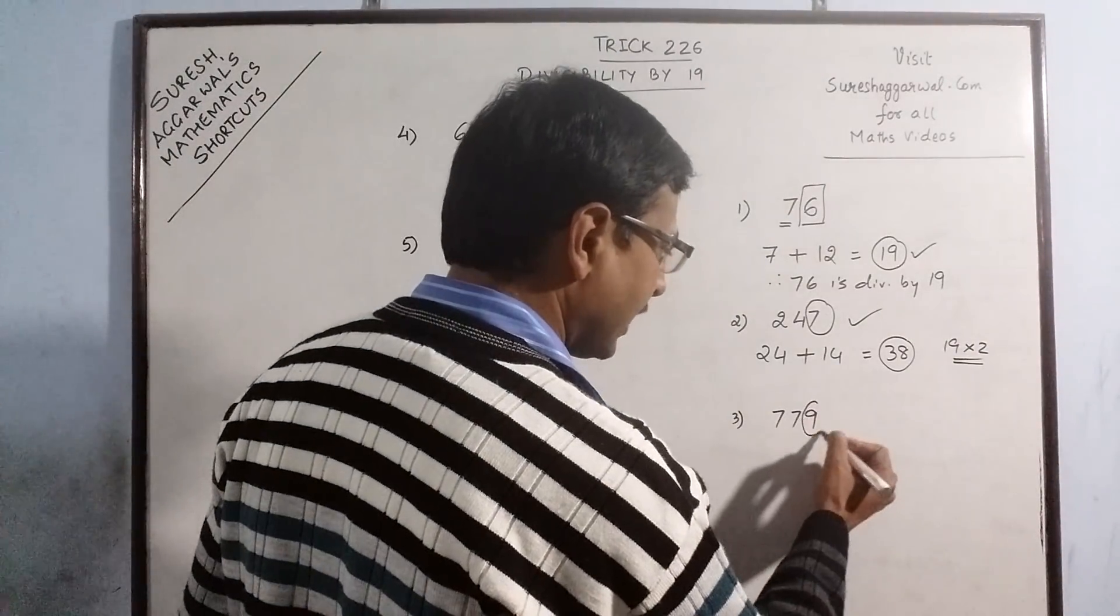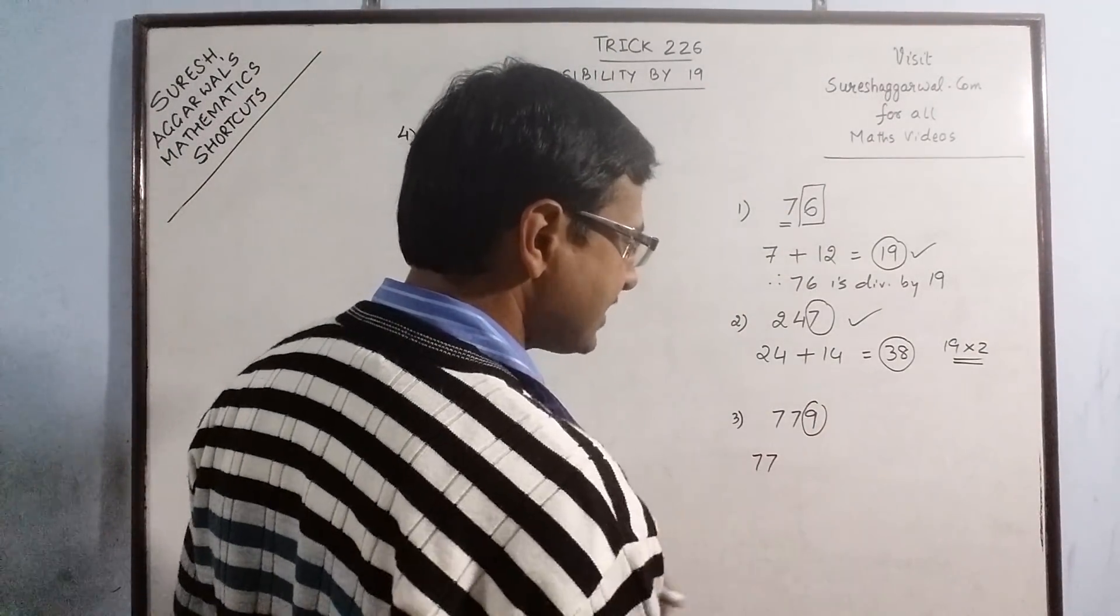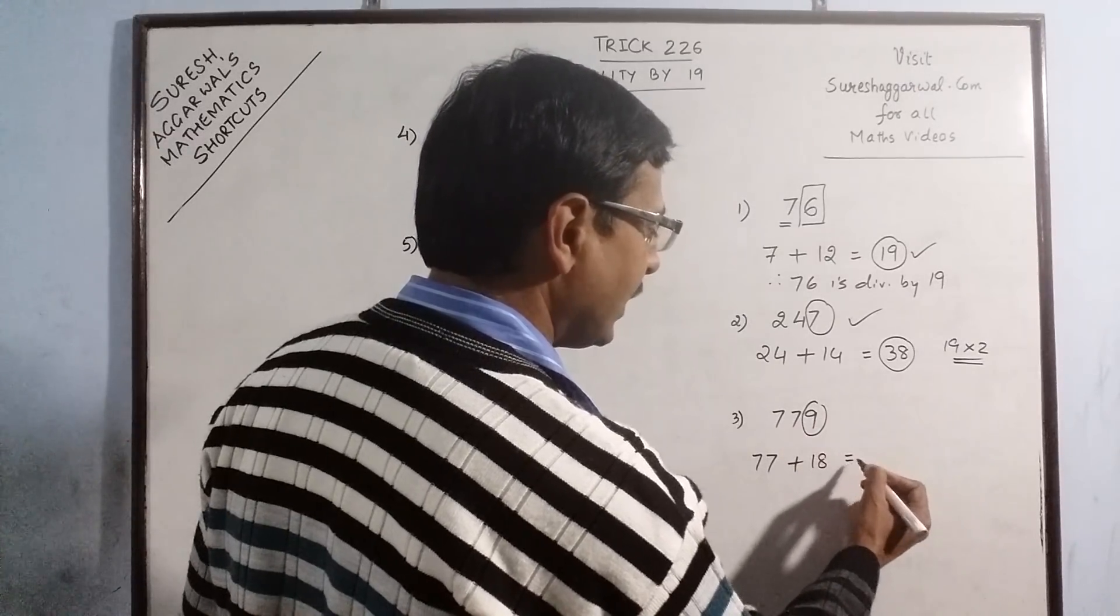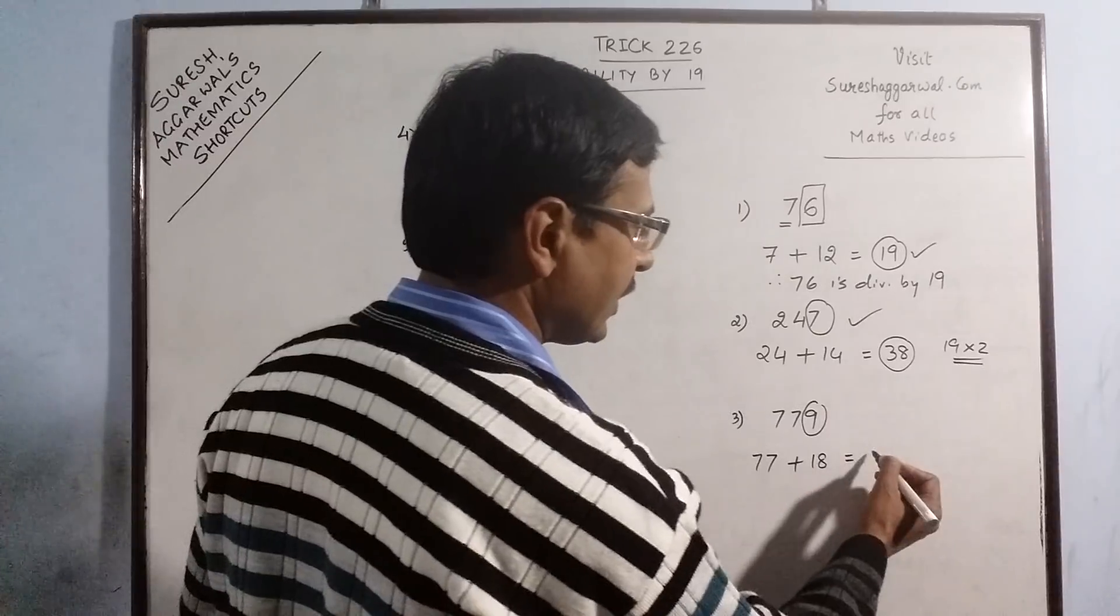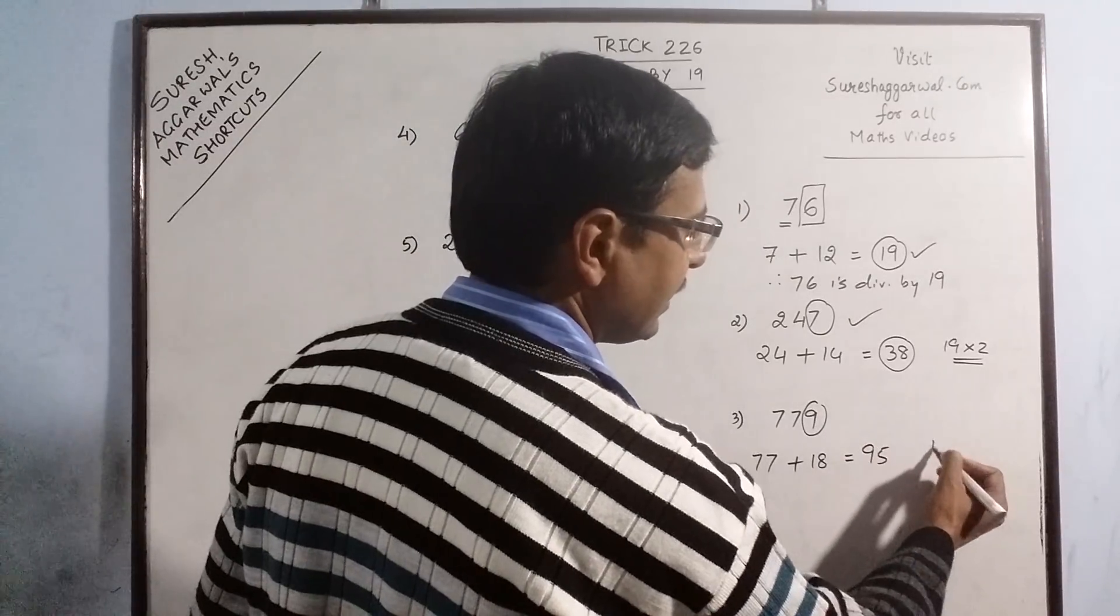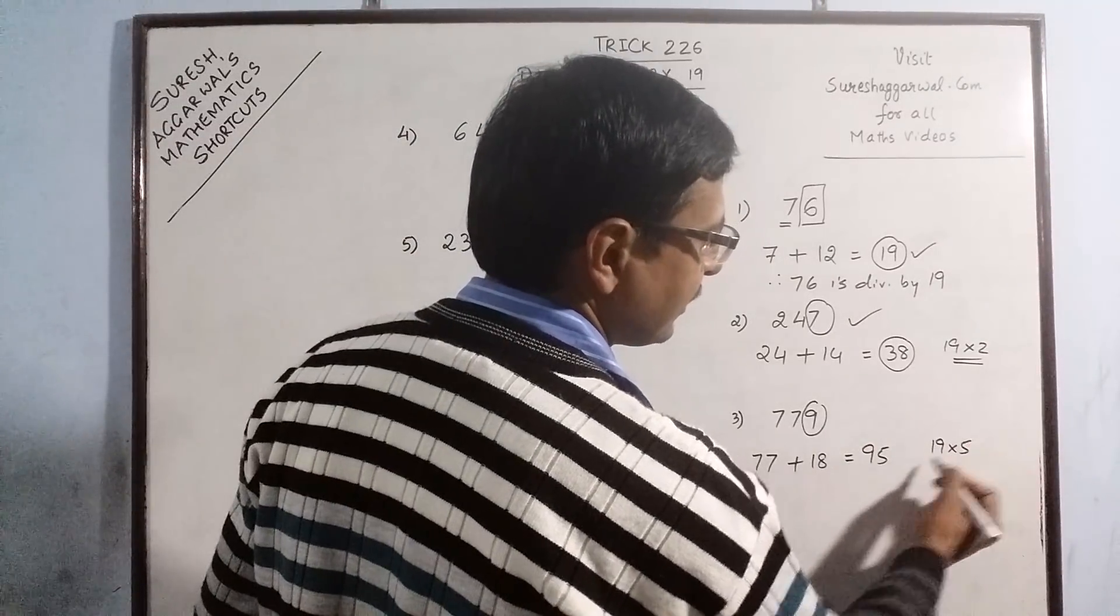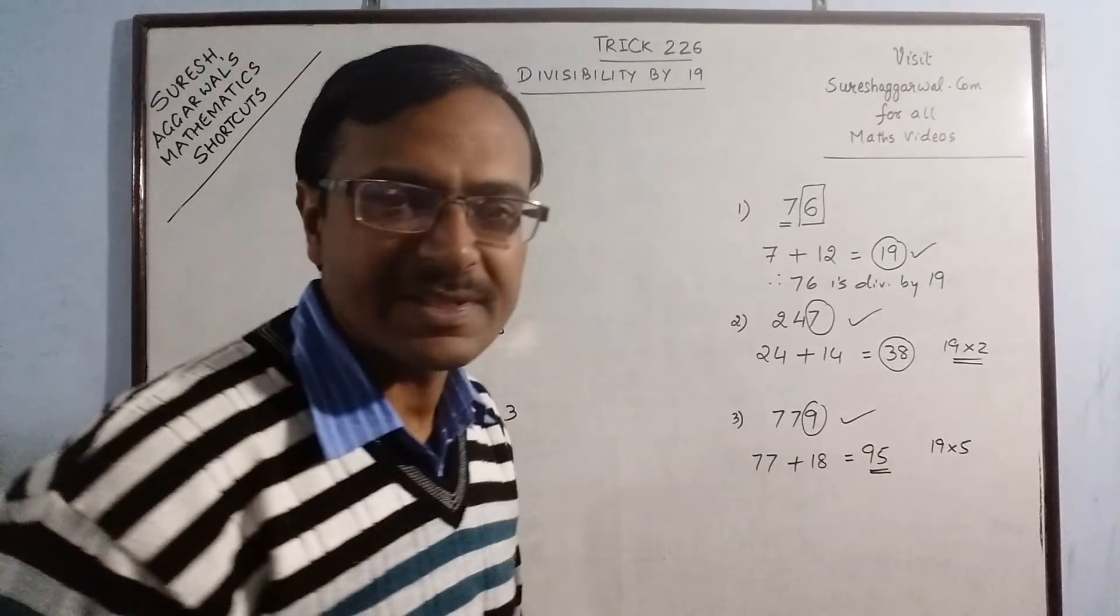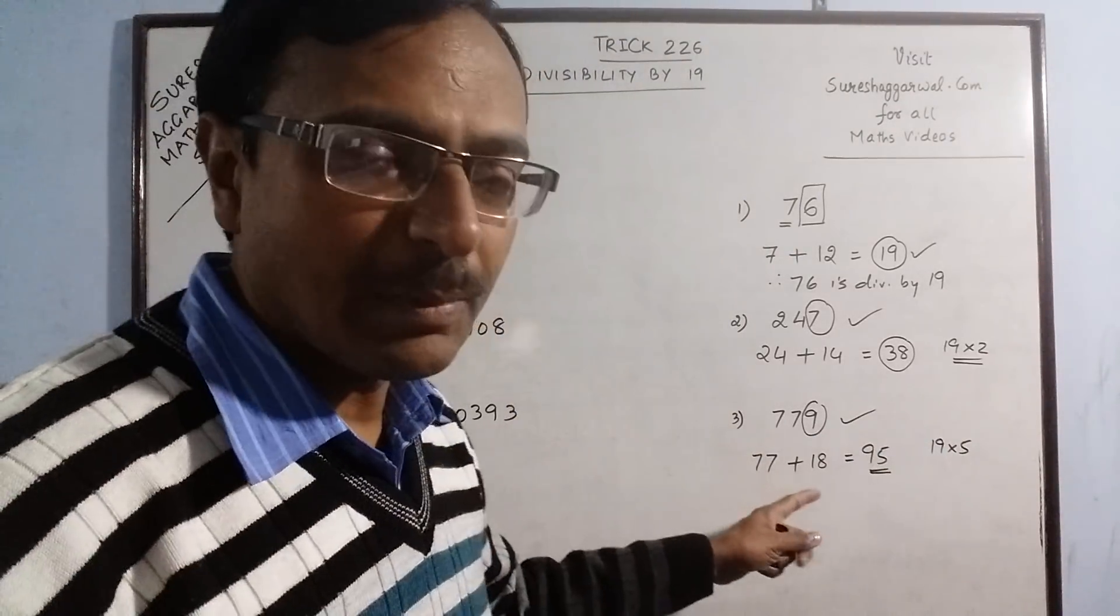779, separate out 9. The remaining number is 77. Add 9 to the 18. So when you add them, 80 plus 15, you get 95. And 19 into 5 is 95. So this number is divisible by 90. So the entire number 779 is also divisible by 19.